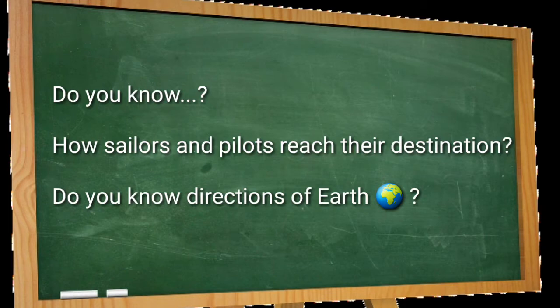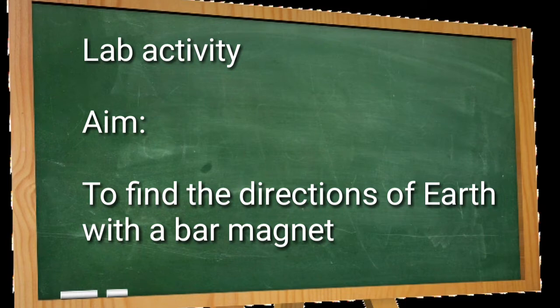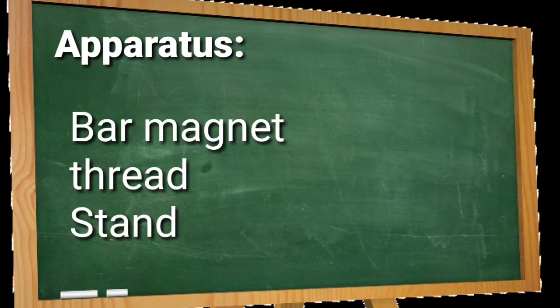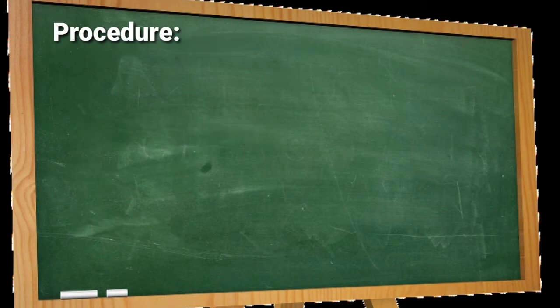Do you know how sailors and pilots reach their destination? And do you know the directions of Earth? To understand these points, let us do a lab activity. The aim of this lab activity is to find the directions of Earth with a bar magnet. The apparatus needed are: a bar magnet, thread, and a stand.